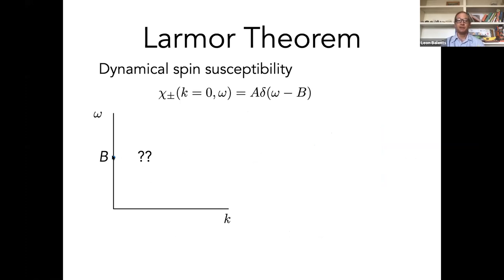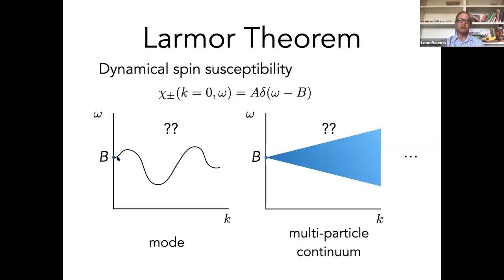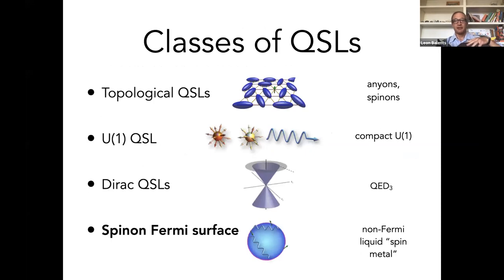If we're interested in the dynamical spin susceptibility in the frequency and momentum plane, this Larmor theorem tells us that at k equals zero, this function is just zero everywhere except the delta function at the magnetic field. So now we can play a game. How do we continue this thing to the rest of this quadrant? It could be that there's a mode coming out of here that disperses and ends at the Zeeman energy. It could also be that this is the termination of a multi-particle continuum. In this parton mean field theory, this is what you would expect.